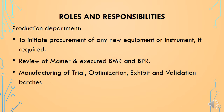The production department is the actual executor of trial, optimization, exhibit, and validation batches. It initiates the procurement of any new equipment, instruments, or spare parts required for the execution of batches. The production department reviews master and executed documents — that is, batch manufacturing records and batch packaging records — and is responsible for manufacturing all trial, optimization, exhibit, engineering, and validation batches.